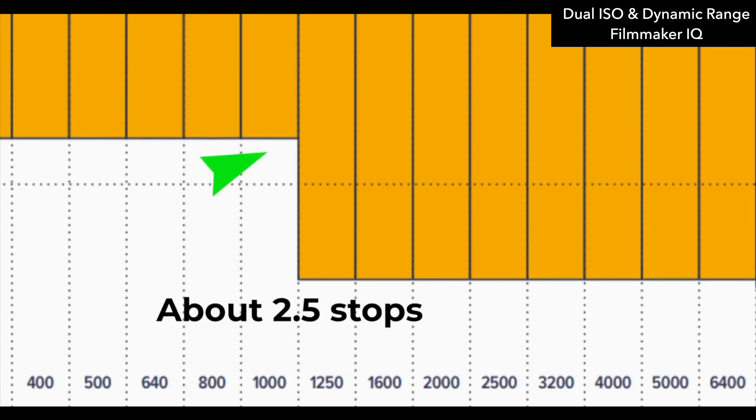That's because ISO 1250 draws from its dual native ISO at 3200. As a result, we don't have as much highlight detail, but we do gain some latitude in the shadows. This becomes very interesting when you begin to light or expose a scene with dual native ISO — we're able to trade highlight detail for shadow detail and vice versa.